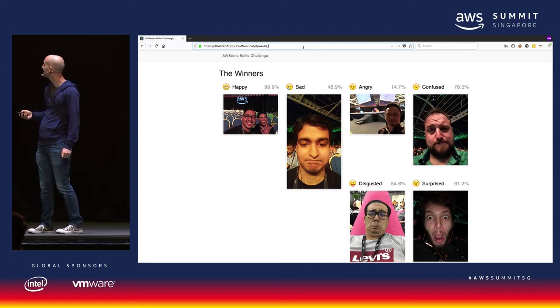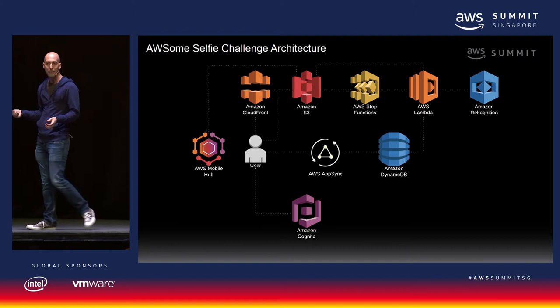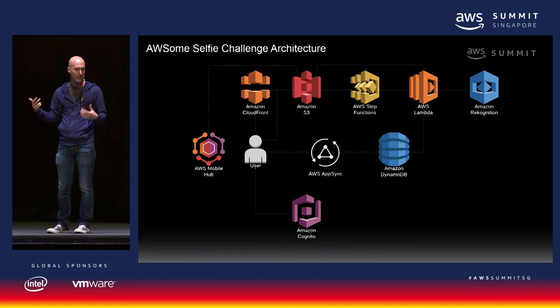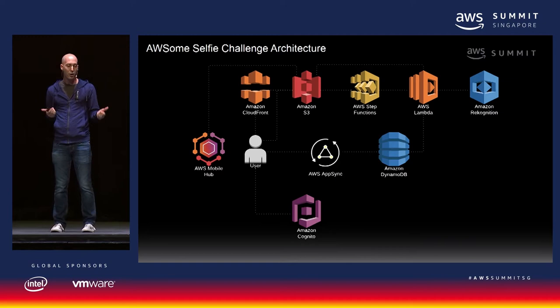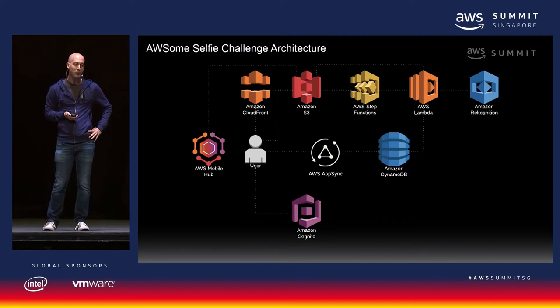How did I build this? It was actually really easy. This is the architecture: I started with AWS Mobile Hub, which makes it easy to get started building applications for mobile devices. In this case, it was a simple web app powered by React. Mobile Hub set that up for me. It also set up a Cognito user pool and a CloudFront distribution backed by S3. When you load the app, you get a set of temporary credentials delivered to your device via Cognito, giving you access to an IAM role that lets you upload a file to an S3 bucket.